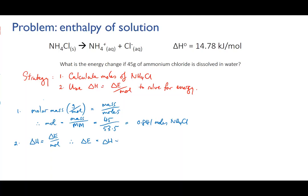We find then that all we have to do is multiply the enthalpy 14.78 kilojoules per mole by the number of moles that we have present which is a little under one mole, 0.841. When we calculate that out we find that it is 12.43 kilojoules.